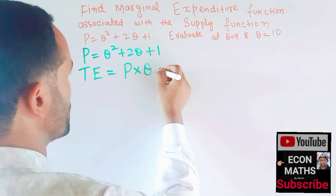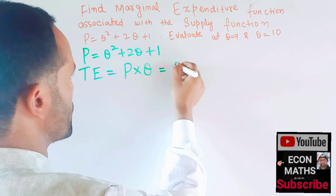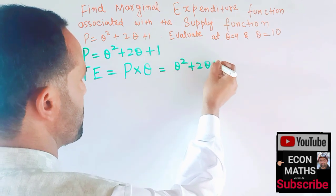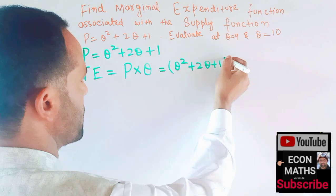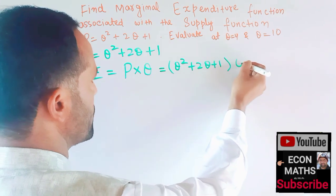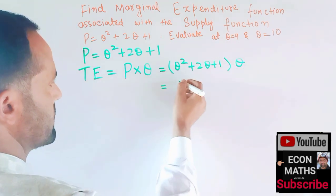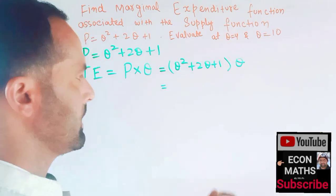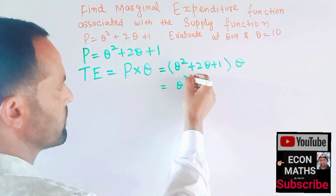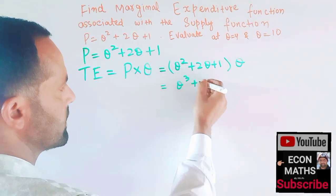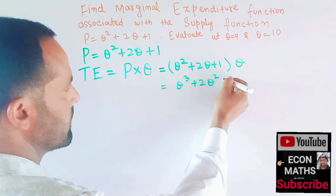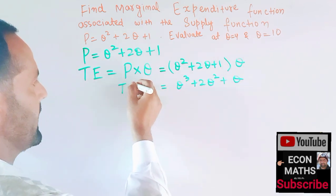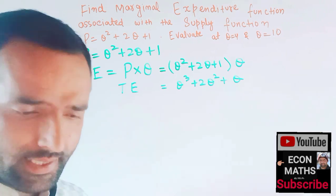We have p = q² + 2q + 1. We multiply this by q, distributing q to each term, and we get the total expenditure function: TE = q³ + 2q² + q.